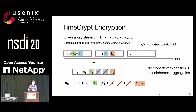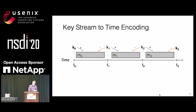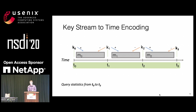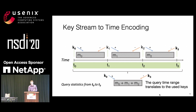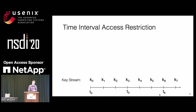In symmetric homomorphic encryption, the decrypting client needs to know which keys were used for encryption. To address this, TimeCrypt introduces a key-stream-to-time encoding: each stream starts at timestamp T0 and proceeds in fixed time windows. By assigning a key to each border timestamp, we introduce a direct mapping from keys to time. For example, if you query T0 to T3, the client directly knows it needs key 0 and key 3 to decrypt the result.